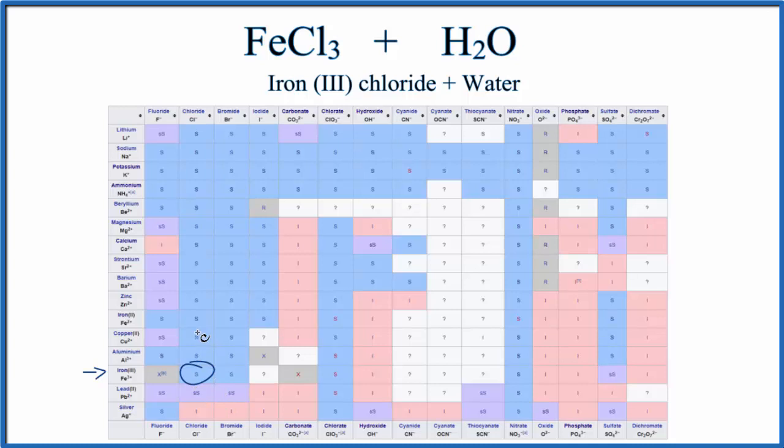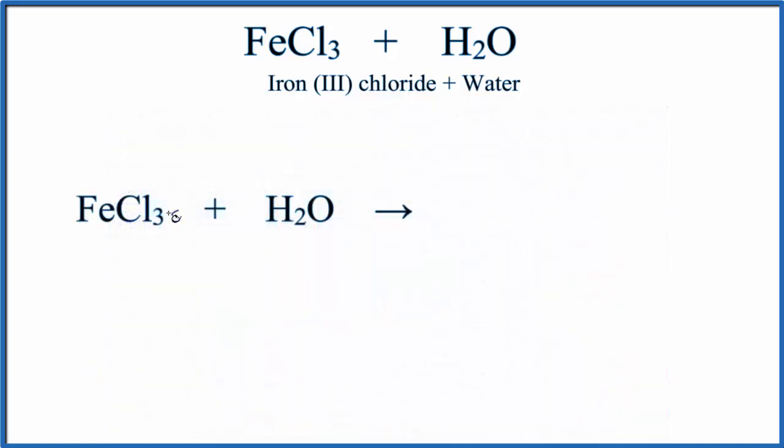So it is soluble in water, so we can go back now and write the equation. We have our solid iron 3 chloride and our liquid water. We'll put the iron 3 chloride into the water, and it'll dissolve and dissociate. It'll break apart into its ions, that Fe3 plus and then the Cl minus.